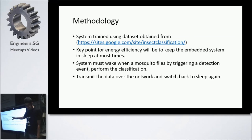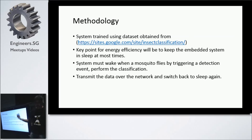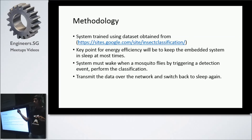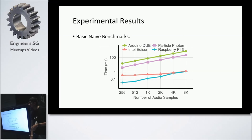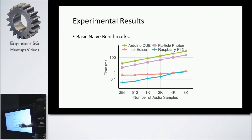The methodology: we train the system using data from an open source site — I'll put the slide up on the Hackware page. They also have MATLAB code available, and parts of our algorithm are taken from that MATLAB code. For energy efficiency, the system stays in sleep most of the time, wakes up when a mosquito flies by triggering a detection event, performs classification, and transmits the data. The system wakes up via a hardware interrupt from the trap built by Batista — the trap outputs a high signal whenever a mosquito flies by, used to interrupt and wake the Raspberry Pi or Intel Edison.